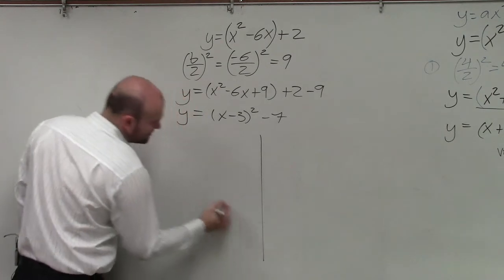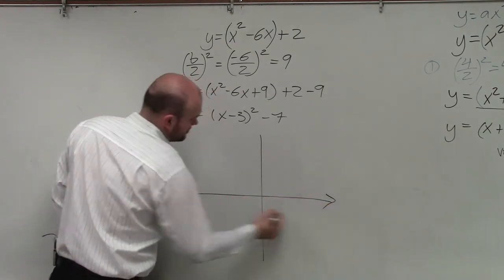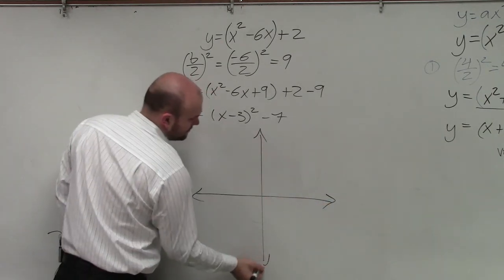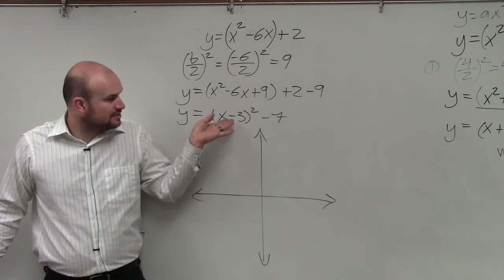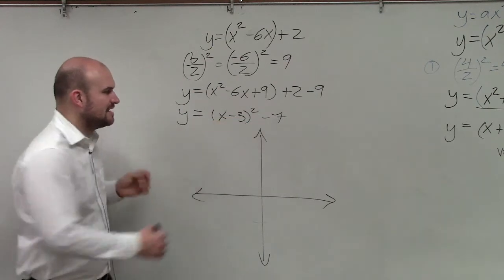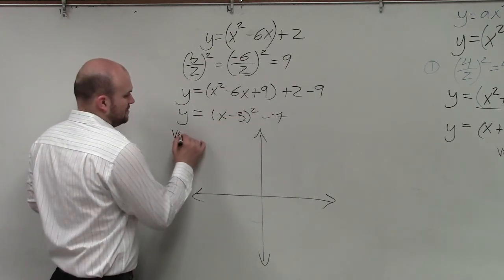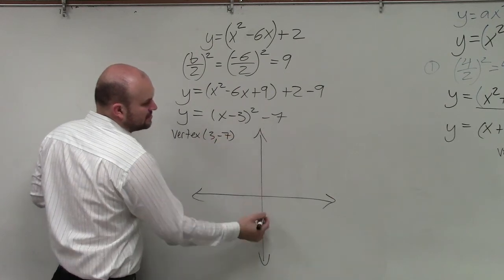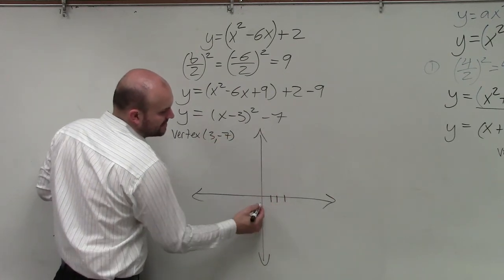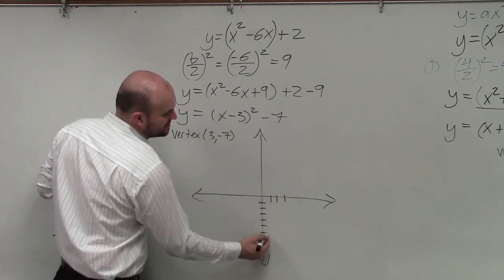Now, to go ahead and graph this, ladies and gentlemen, all we're simply going to do is shift to the right 3, down 7. That's going to be your vertex. So our vertex is 3, negative 7. So I go over 3, 1, 2, 3, down 7, 1, 2, 3, 4, 5, 6, 7.